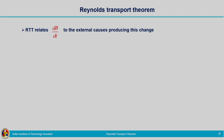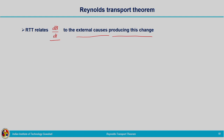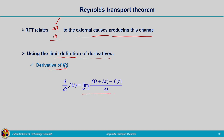Reynolds transport theorem relates the time rate of change of extensive property — given by dB/dt — to the external causes which produce this change. For getting the time rate of extensive property dB/dt, we make use of the limit definition of derivatives from calculus: d/dt[f(t)] = lim(delta t → 0) [f(t + delta t) − f(t)] / delta t.